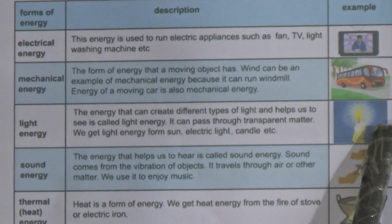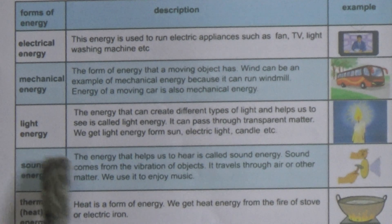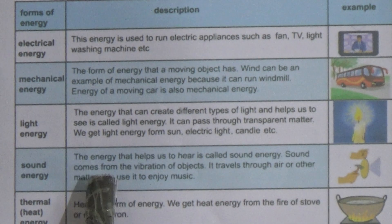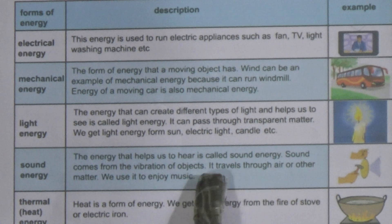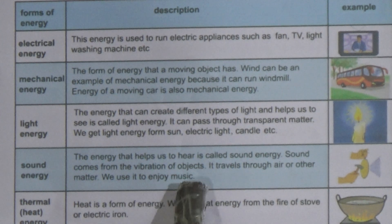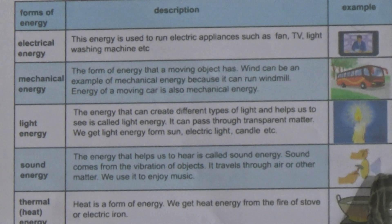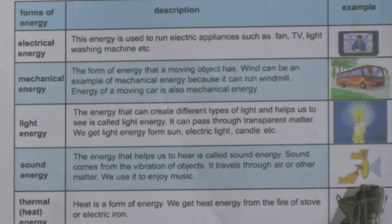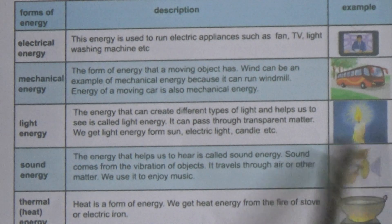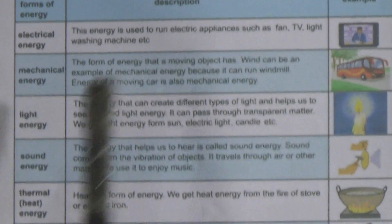Now come to sound energy. The energy that helps us to hear is called sound energy. Sound comes from the vibration of objects. It travels through air or other matter and is used to enjoy music. The example shown is a school bell. The picture shows vibration in the air — when that vibration reaches our ears, we can hear the sound of the ringing bell.